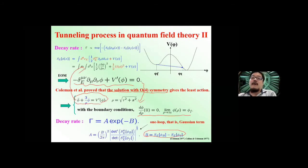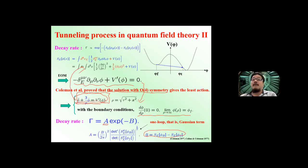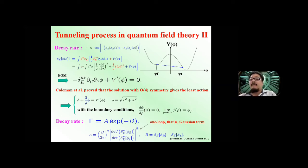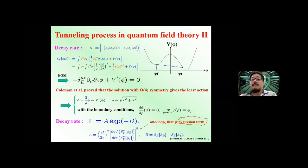Once you get the classical solution, you can expand the action around it. The first variation vanishes by definition of the classical solution, but the second derivative — the second variation — does not vanish, and this is nothing but the Gaussian term, equivalent to the one-loop effect. The one-loop contribution can be written as a logarithmic term, so exponential times logarithmic gives the pre-factor. The pre-factor is thus given by the one-loop effect or Gaussian term around the classical solution. This is the basic of the tunneling process in quantum field theory.